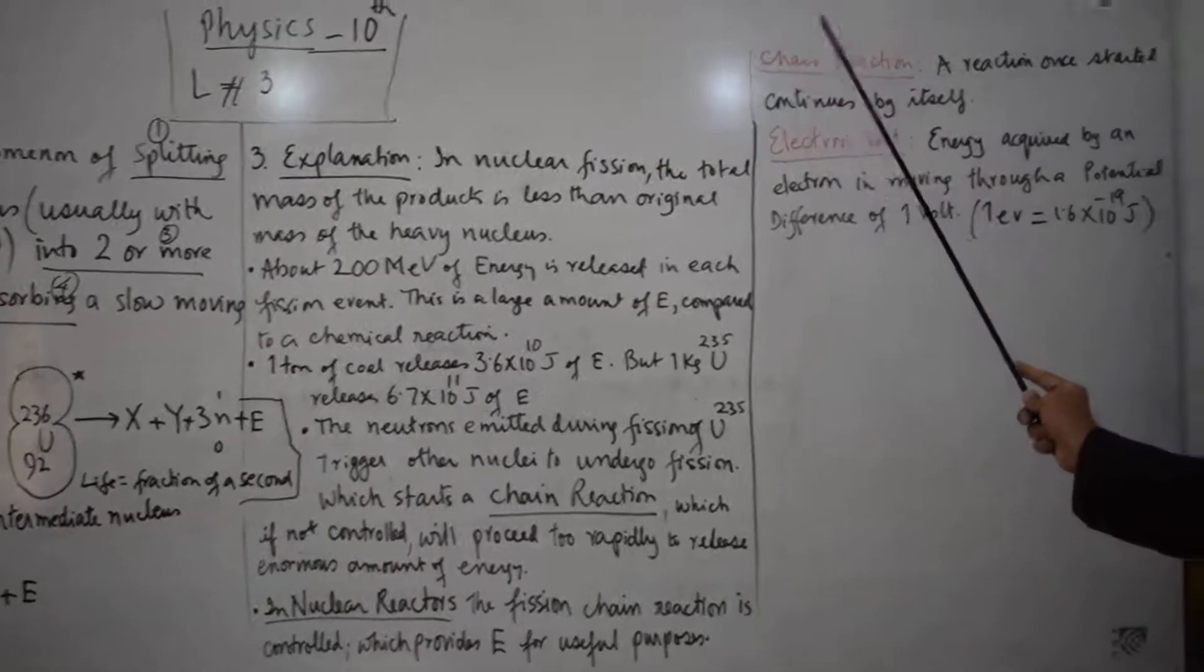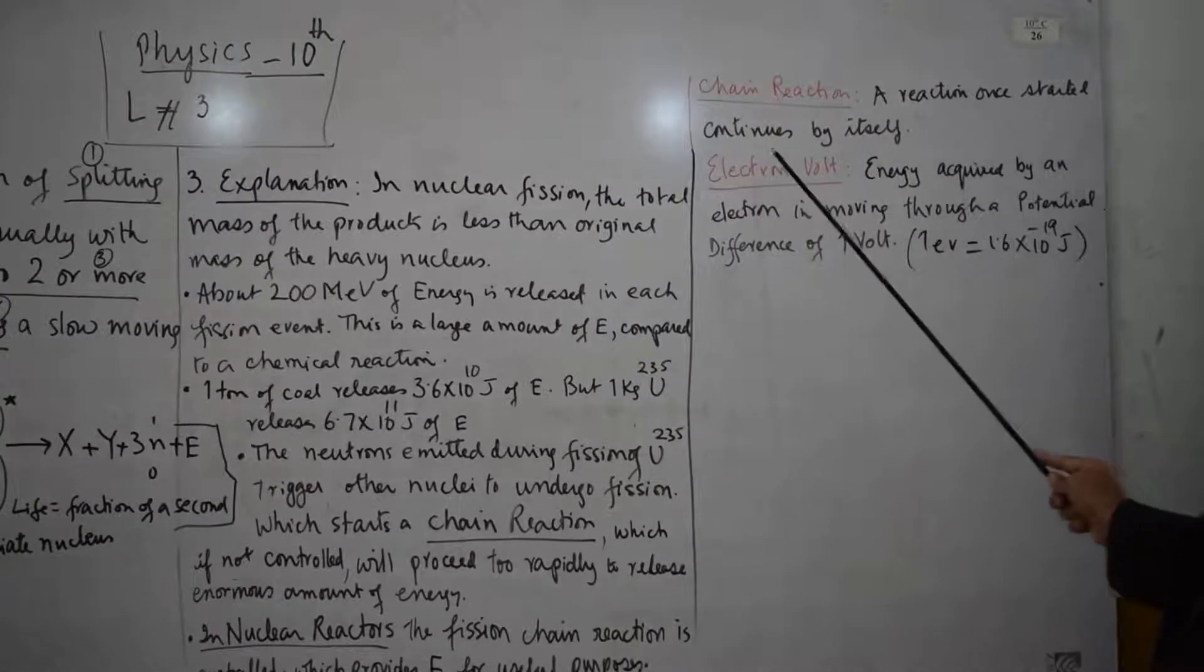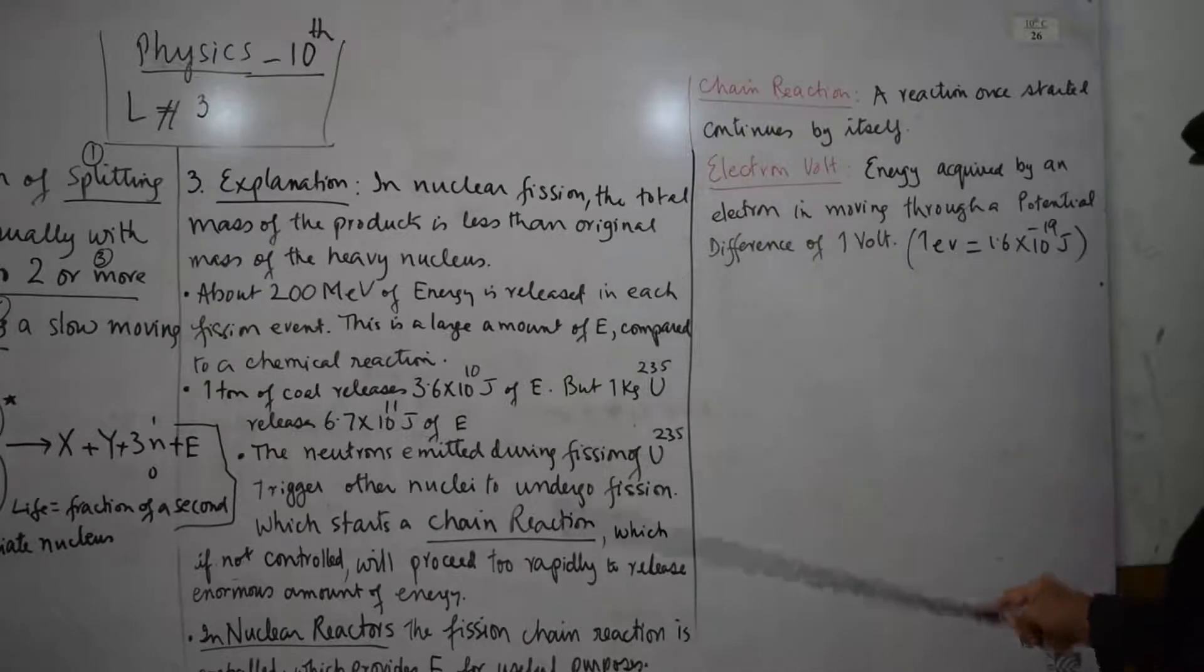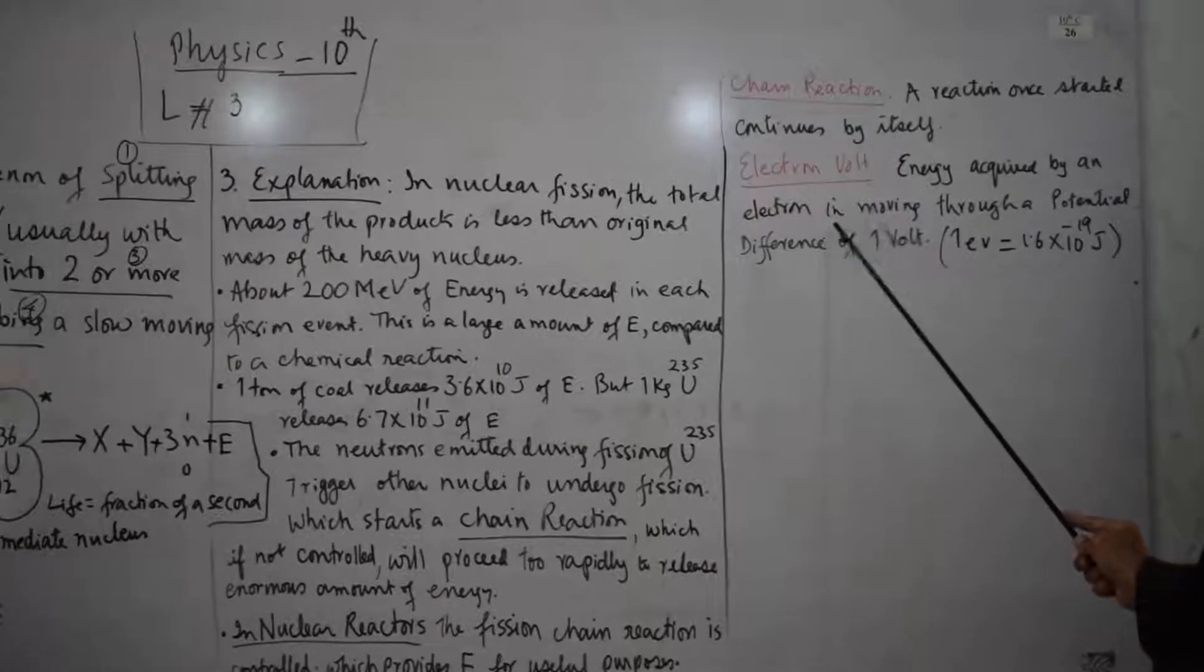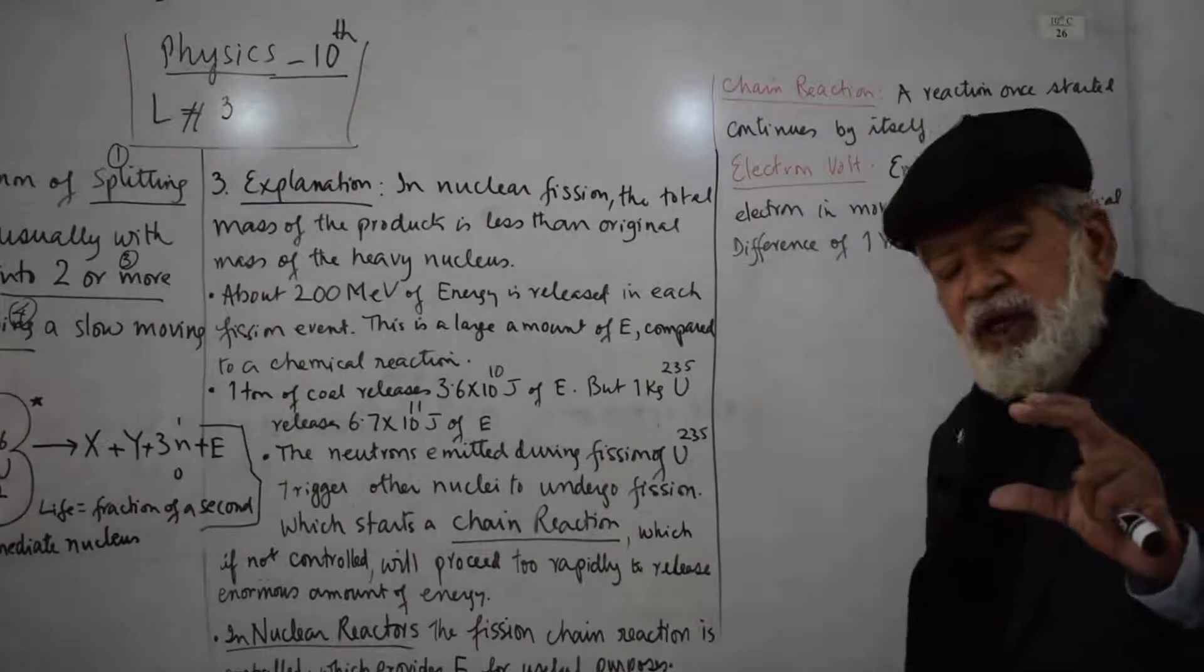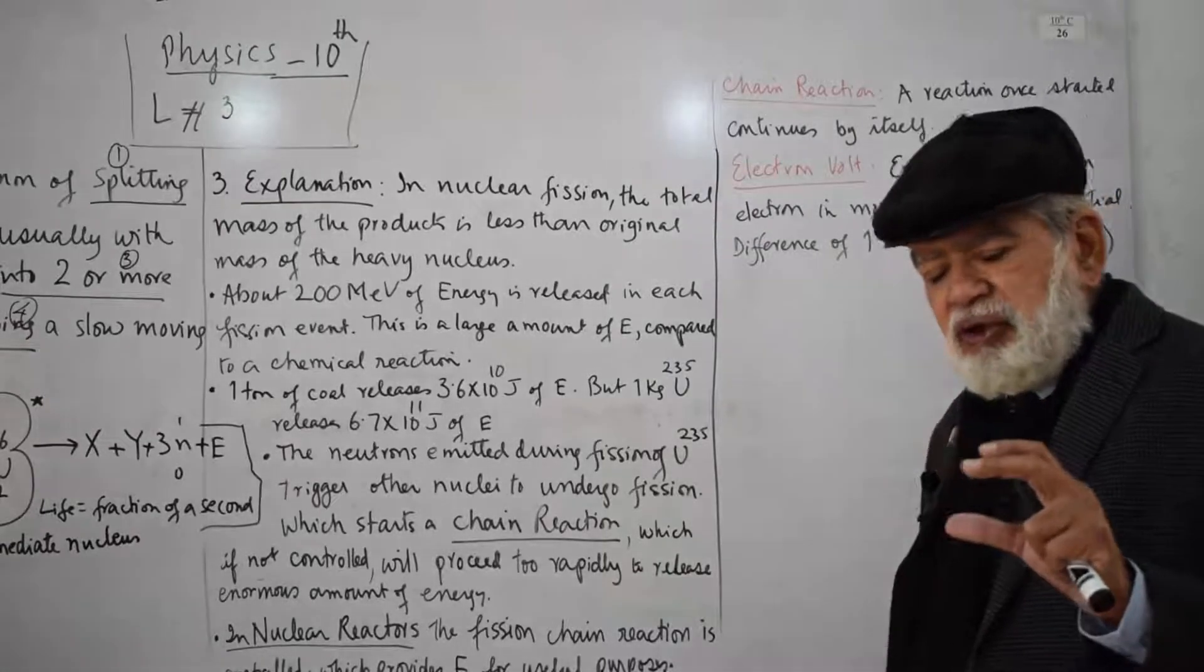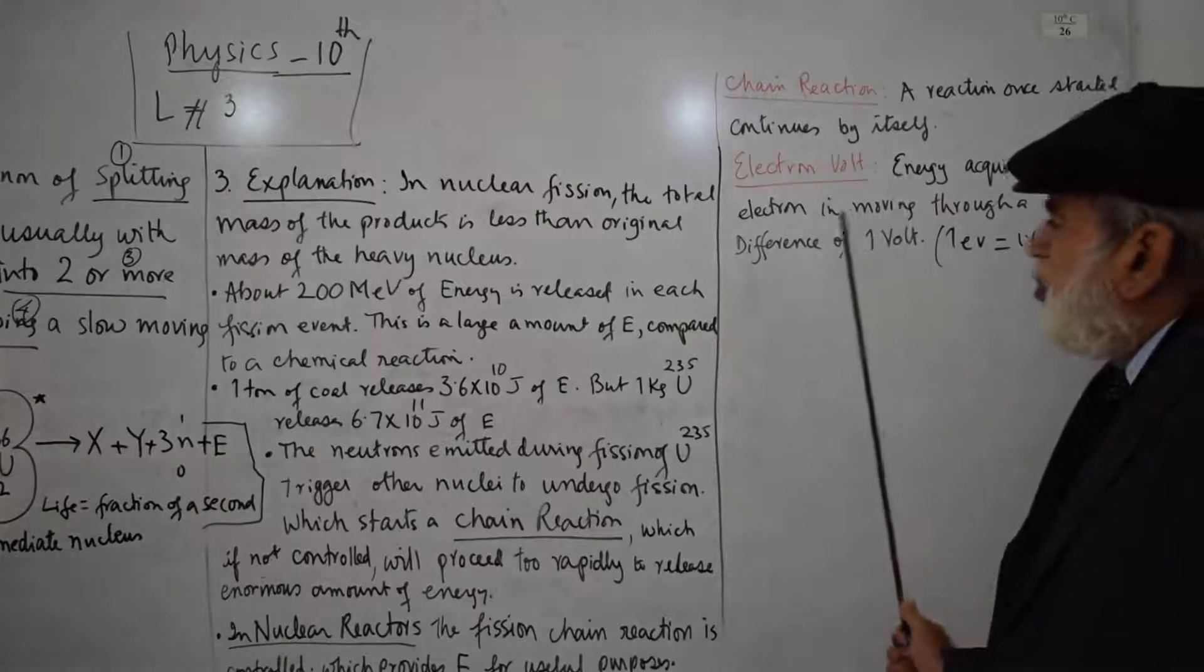Now these two definitions: chain reaction - a reaction, once started, continues by itself. Number two: electron volt - energy acquired by an electron in moving through a potential difference of one volt. When an electron goes through a potential difference, how much energy is acquired? That is electron volt.